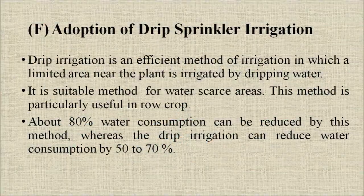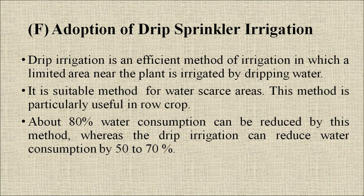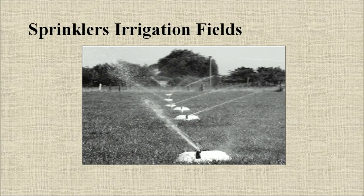Adoption of drip and sprinkler irrigation: drip irrigation is an efficient method of irrigation in which a limited area near the plant is irrigated by dripping water; it is suitable for water-scarce areas. This method is particularly useful in row crops — about 80 percent of water consumption can be reduced by this method, whereas drip irrigation can reduce water consumption by 50 to 70 percent. This includes use of sprinklers in lawns and big fields, and pot irrigation by online drippers.